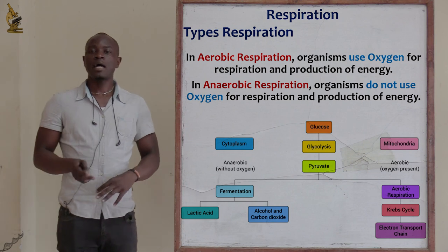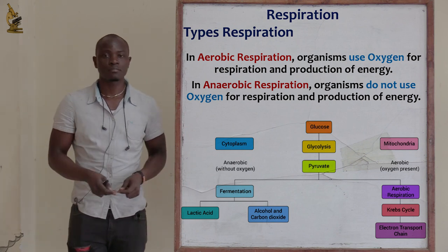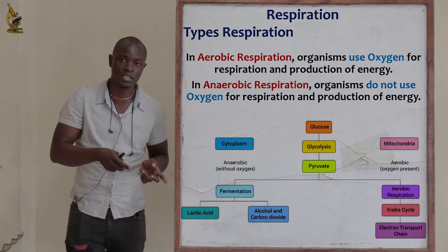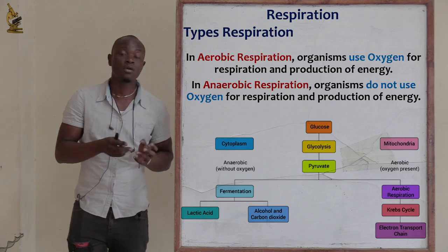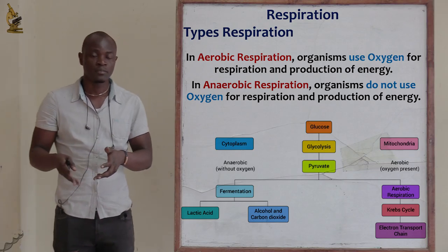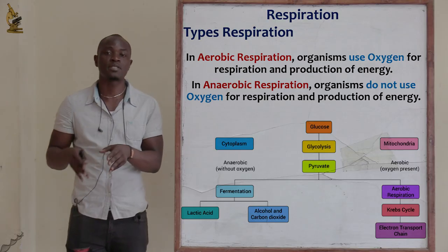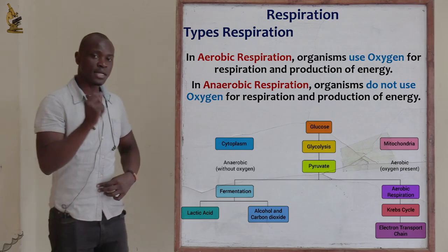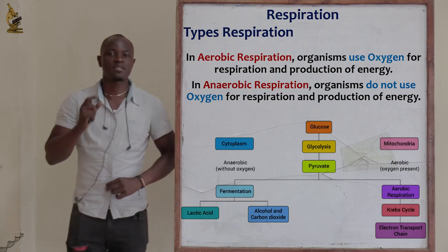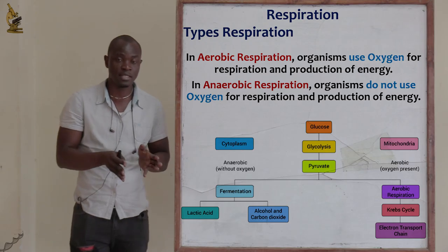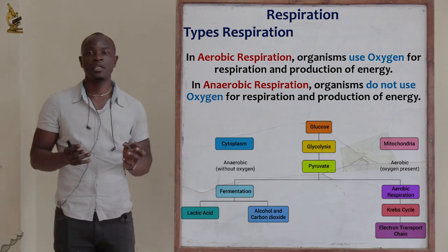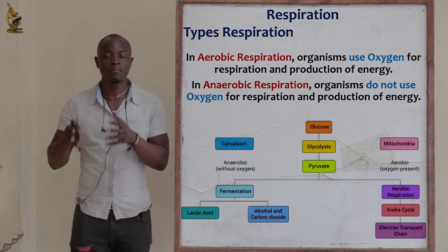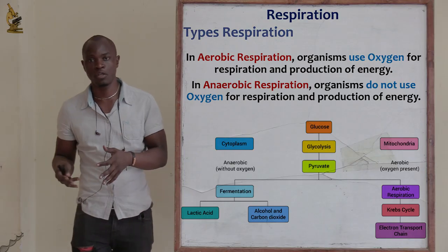In aerobic respiration, if oxygen is not available, organisms are going to die because they require oxygen. In anaerobic respiration, if oxygen is present, organisms are going to die — oxygen will poison these cells. This means there are organisms which must use oxygen for respiration, and if oxygen is not present, they will die. For anaerobic organisms, they don't use oxygen; if oxygen is made available, it will poison their cells and they will die.